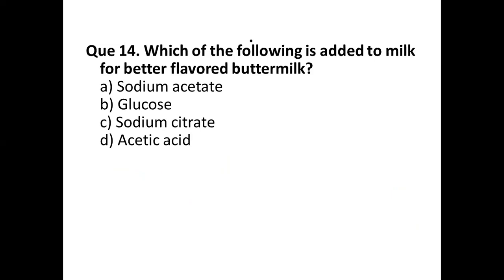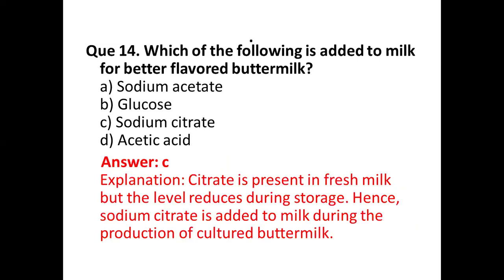Question number fourteen: what is added to milk for better-flavored buttermilk? Options are: (a) sodium acetate, (b) glucose, (c) sodium citrate, (d) acetic acid. The correct answer is option (c) sodium citrate. Citrate is present in fresh milk but the level reduces during storage; hence sodium citrate is added to milk during the production of cultured buttermilk.